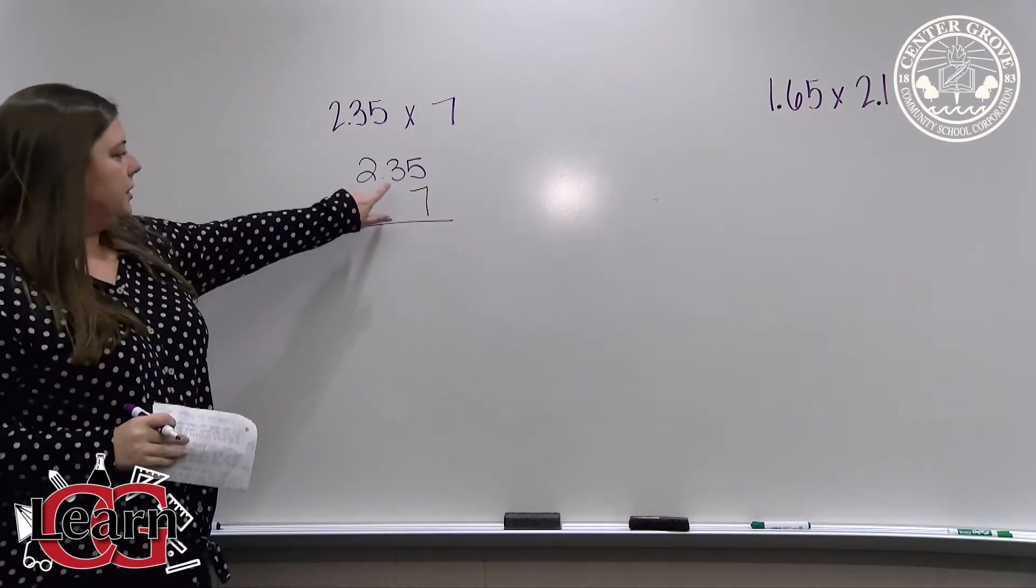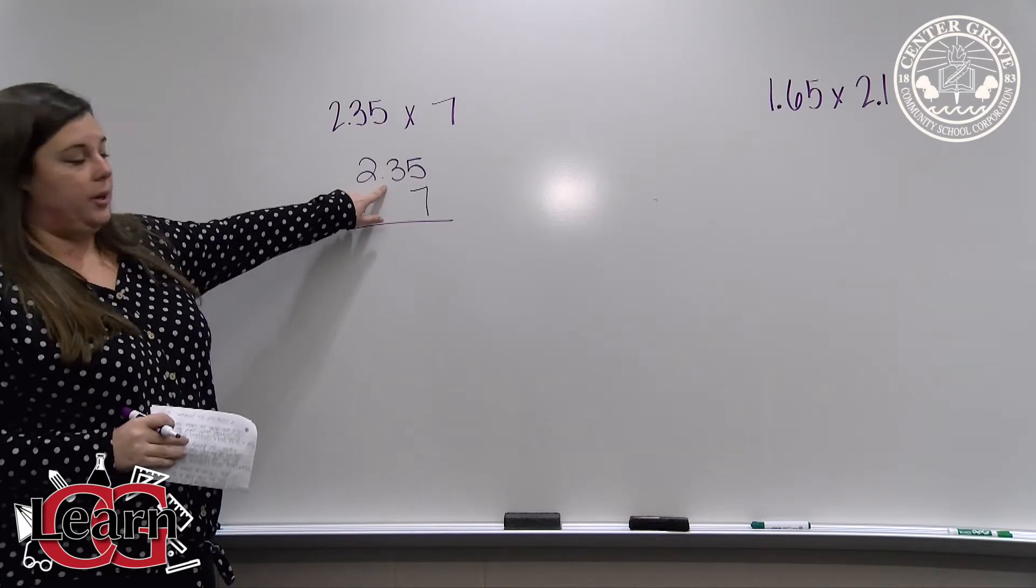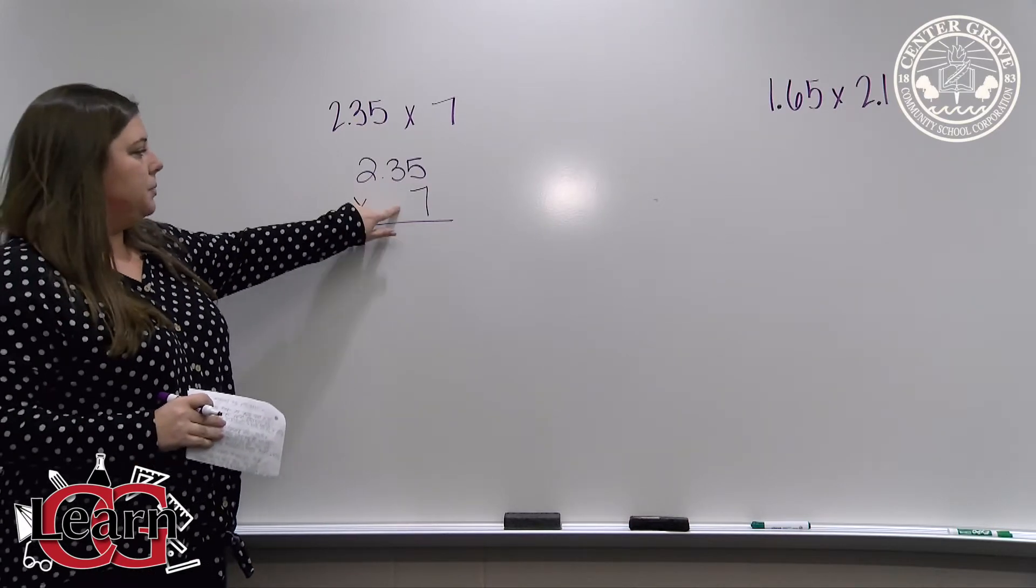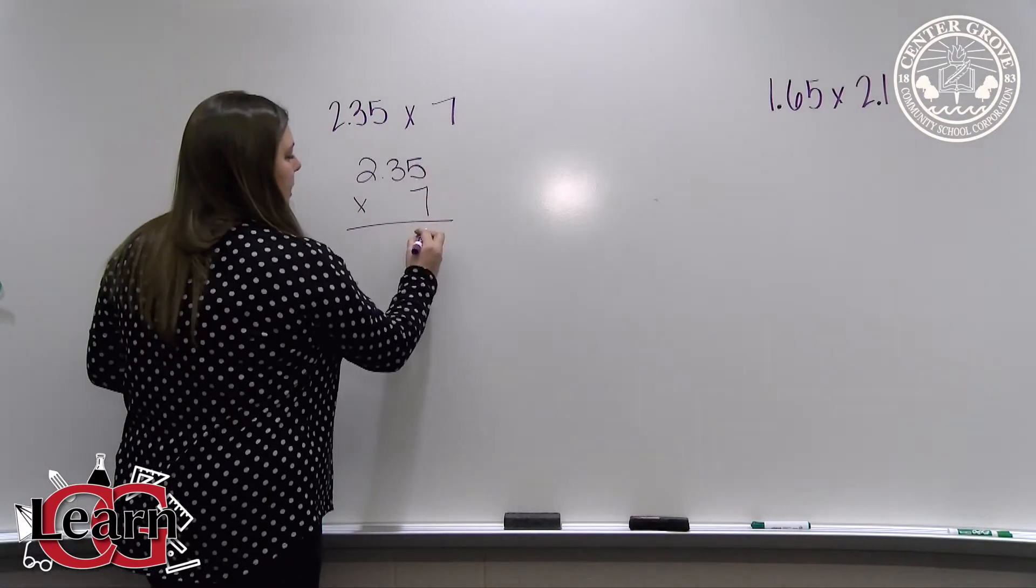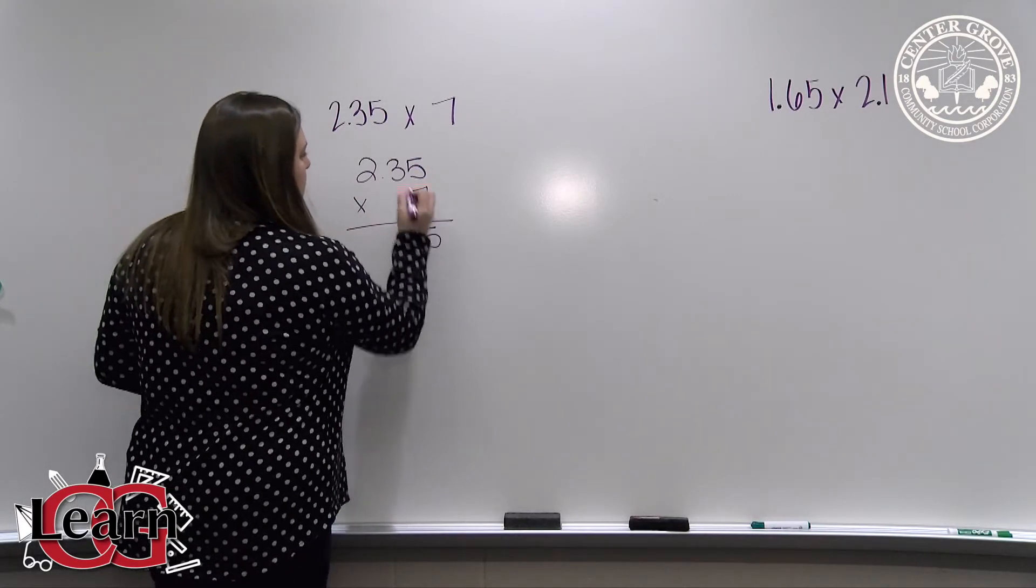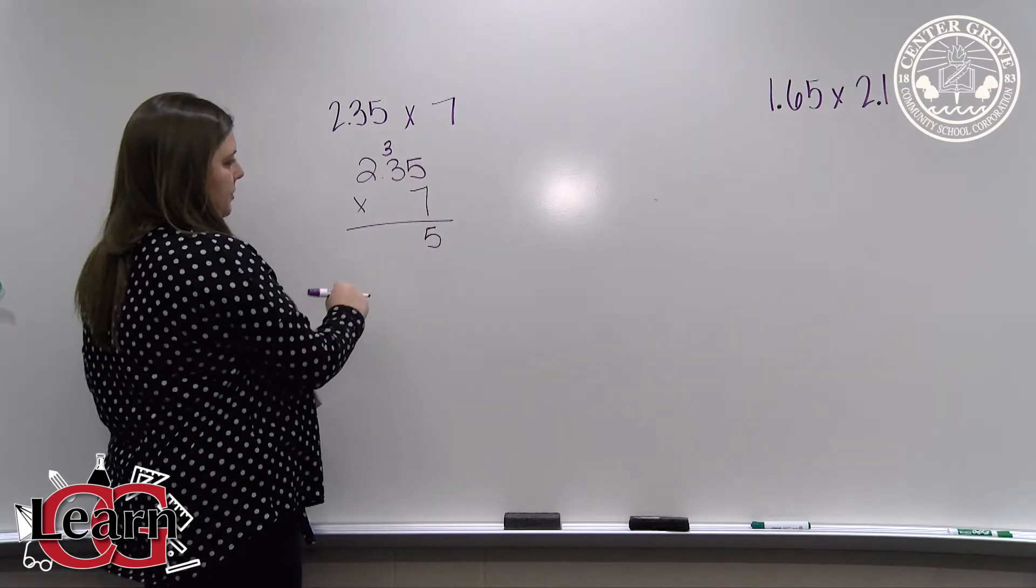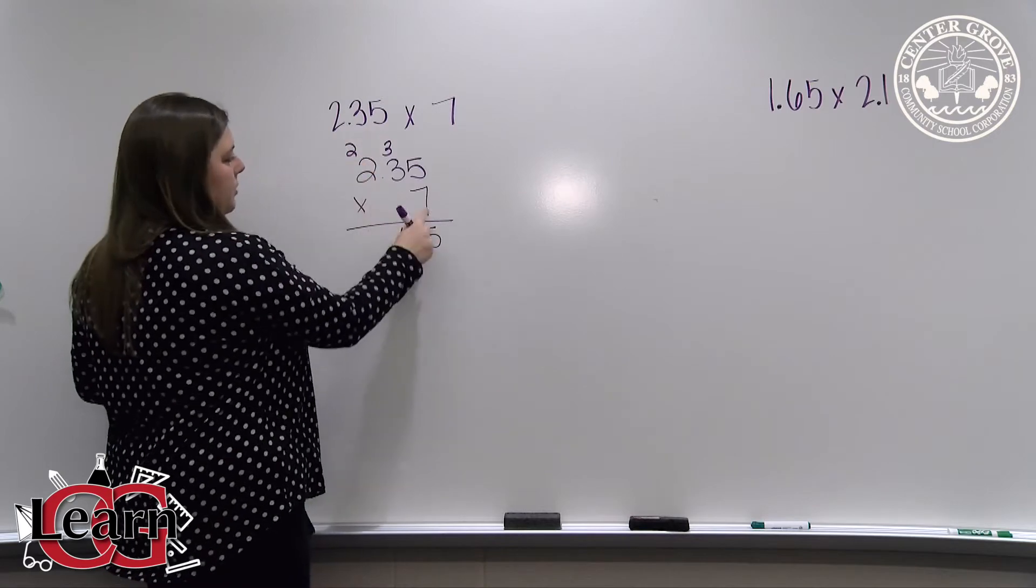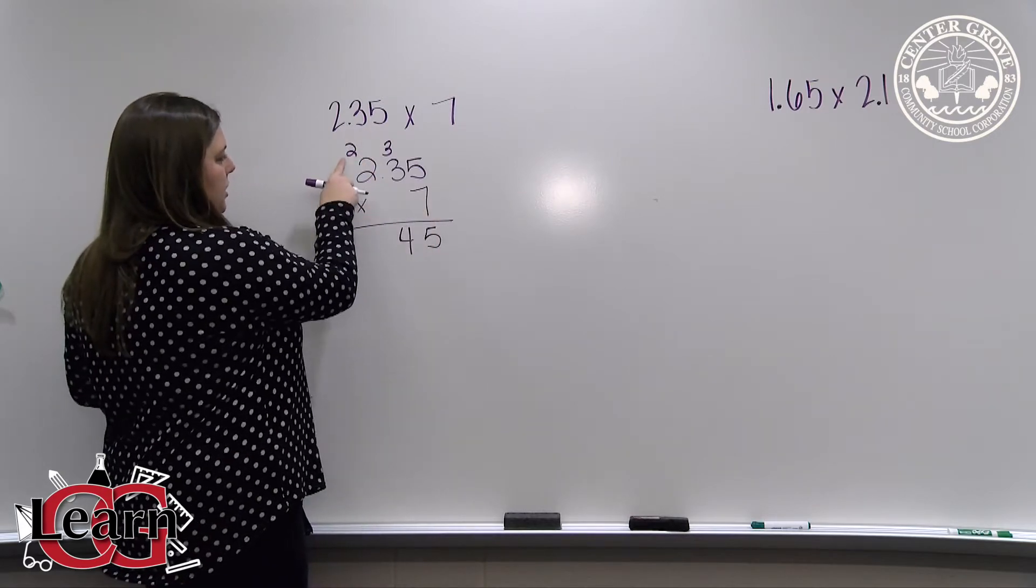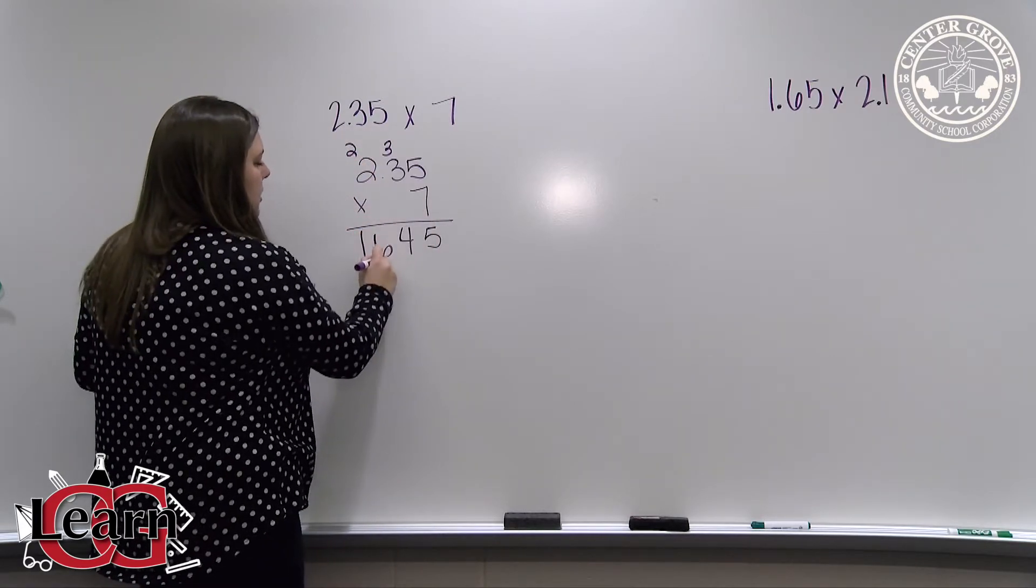Then we're going to completely forget about the decimal point in our problem and compute as if both factors are whole numbers. So 7 times 5 is 35, carry the 3. 7 times 3 is 21 plus 3 more is 24, carry my 2. 7 times 2 is 14 plus 2 more is 16.